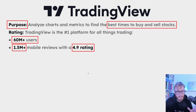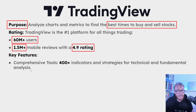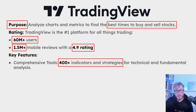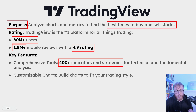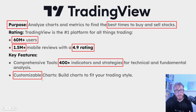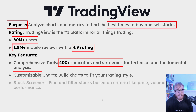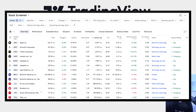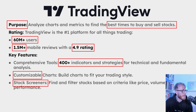Some key features of TradingView include more than 400 indicators and strategies for both technical and fundamental analysis. The charts are very customizable — you can change pretty much everything to fit your trading style. TradingView also has a great stock screener, which is a tool to help you filter out the best stocks to trade based on criteria like price, volume, and other performance metrics. We will take a look at the stock screener later in this course.